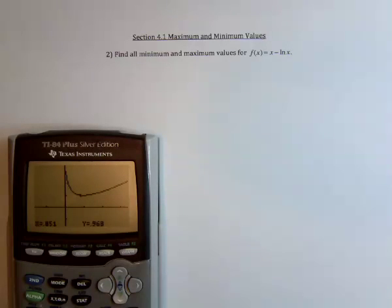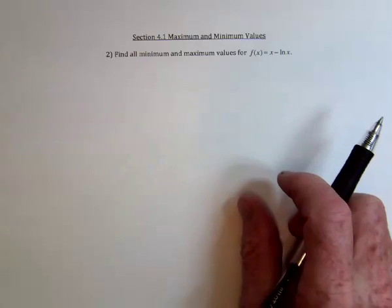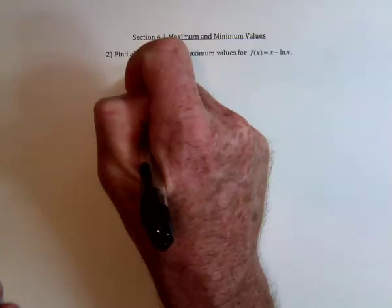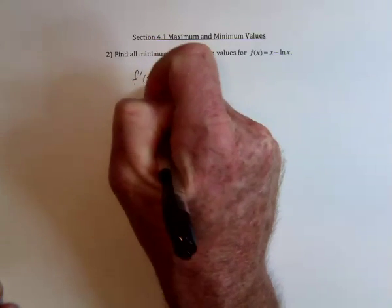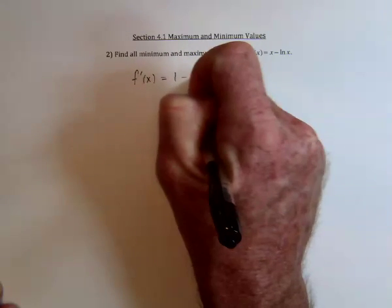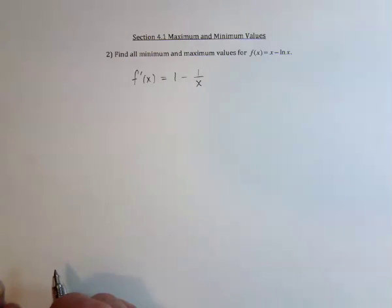Looks like x equals 1 is going to be it. Now, to find out if that's true, take the derivative, and the derivative of x is 1. The derivative for the natural log of x is just going to be 1 over x.